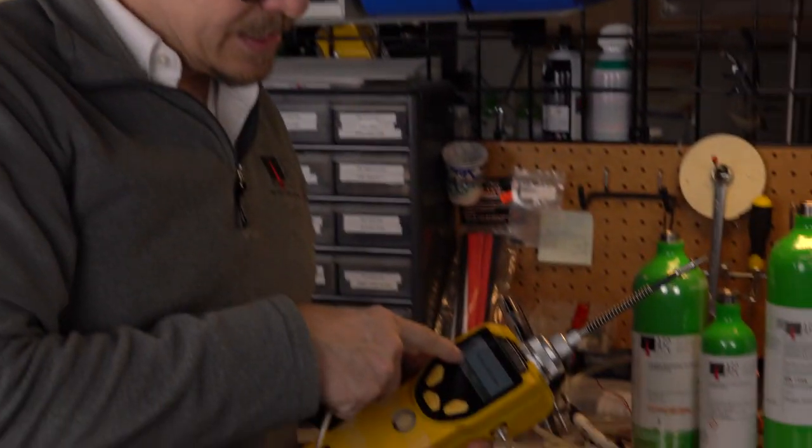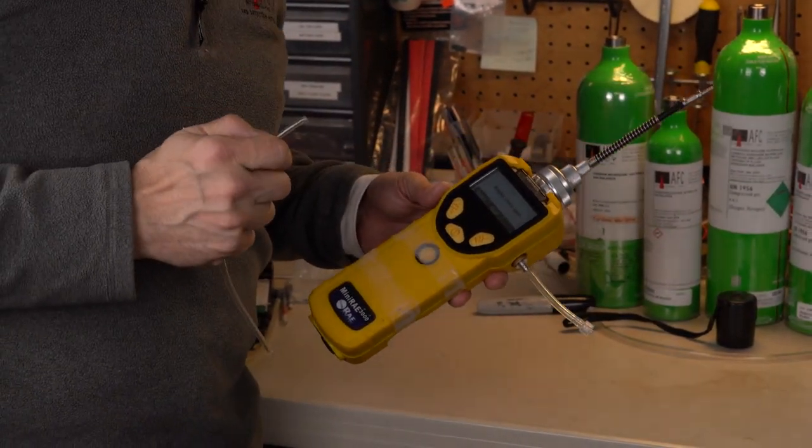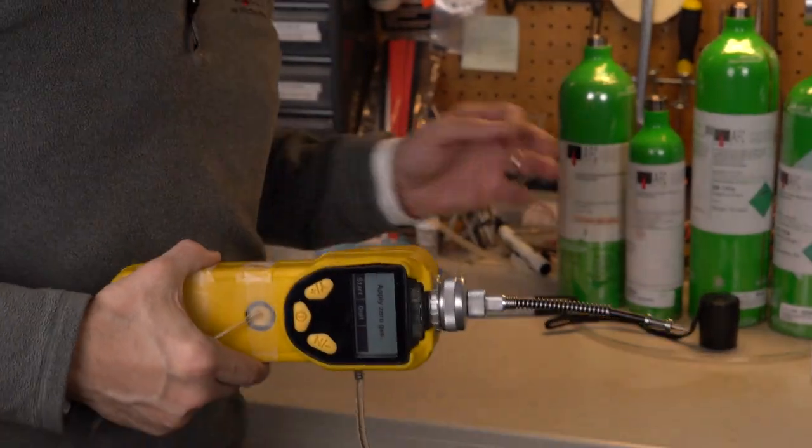As soon as I turned it on, it says apply zero gas. This mini ray's got a tenth of a part per million resolution. So it's asking me to give it zero. I could zero to this room, but a PID has a 0.1 resolution on this. It's a low end detection. So certainly there's organics that could be in the area. I could say they're not significant and zero to this room like a lot of people do. But that might not be good enough if we're looking for really low concentrations.